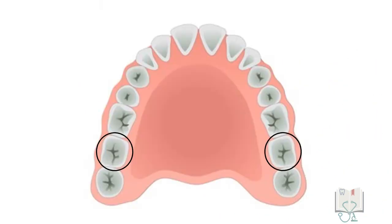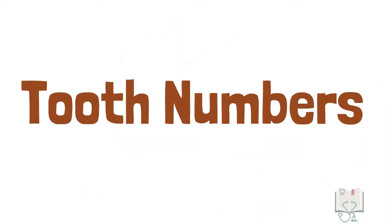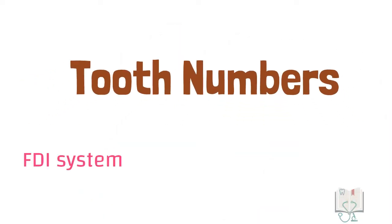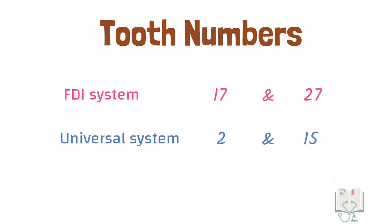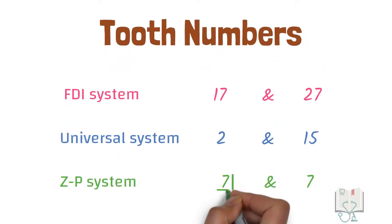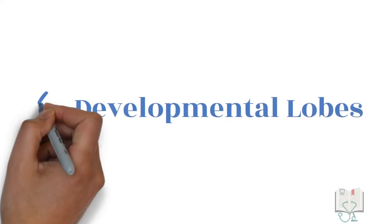The permanent maxillary second molar is the seventh tooth from the midline. Its tooth number in the FDI system is 17 and 27, in the Universal system it is 2 and 15, and in the Zsigmondy-Palmer system it is 7 with appropriate quadrant brackets.